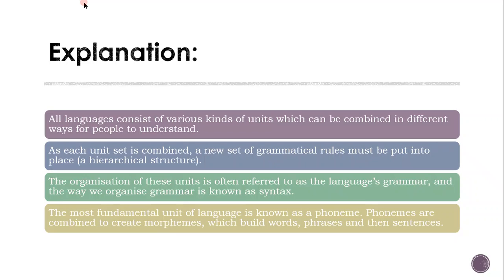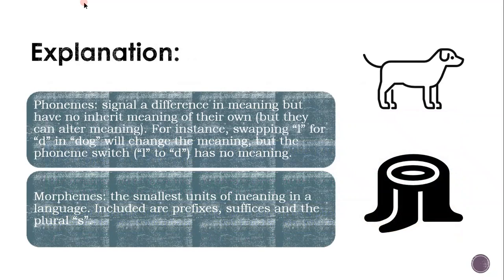The organisation of these units is referred to as the language's grammar, and the way we organise grammar is known as syntax. The most fundamental unit of language is known as a phoneme. Phonemes are combined to create morphemes, which build words, phrases, and sentences. Phonemes signal a difference in meaning but have no inherent meaning of their own. For example, swapping the L for D in 'dog' will change the meaning, but the phoneme switch — L to D — has no meaning.